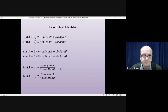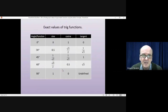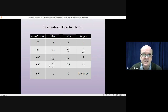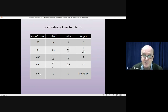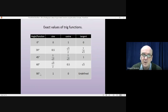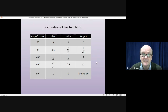The other thing we'll be using is the exact values of certain angles for sine, cos, and tan. These values you are supposed to just know if you're doing A-level: sine, cosine, and tangent of 0°, 30°, 45°, 60°, and 90°. If you don't know these, quickly pause the video and write them down — we will be using them in this lesson.